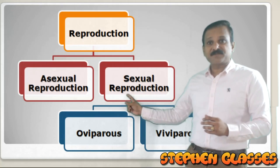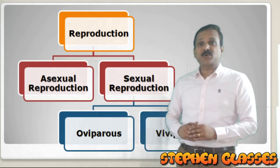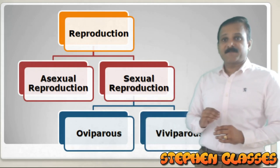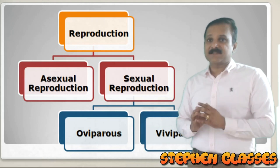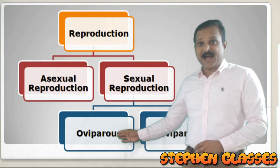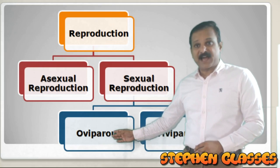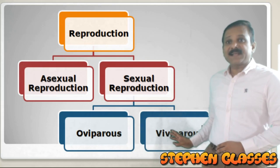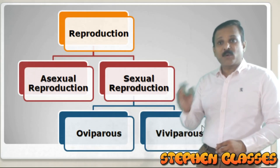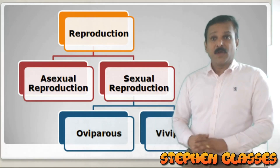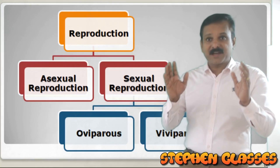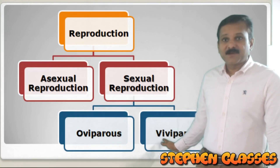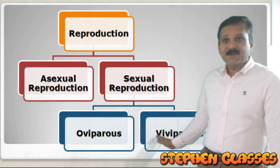In the case of human beings, we perform sexual reproduction. Now, what are the different ways of sexual reproduction? Sometimes it is oviparous and sometimes it is viviparous. Oviparous animals are egg-laying animals — birds, reptiles, and amphibians are all oviparous, as are most fishes. But in the case of viviparous animals like mammals, they give birth to the young one.